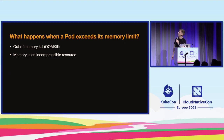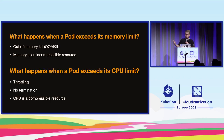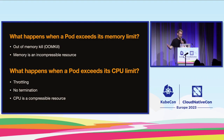What happens when a container exceeds its memory limit? It simply gets terminated — we run into an out-of-memory kill. That's because memory is an incompressible resource: once it's gone, it's gone and we can't share it. For CPU it looks a bit different, because CPU is a compressible resource. We have the ability to throttle, so Kubernetes doesn't need to terminate the pod.